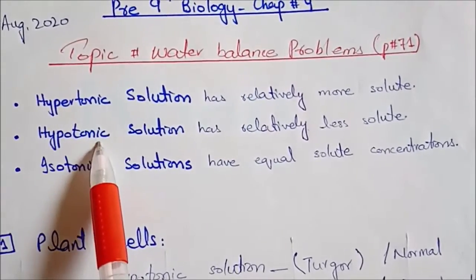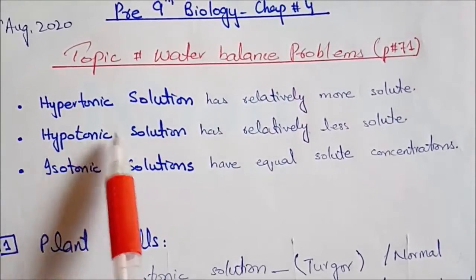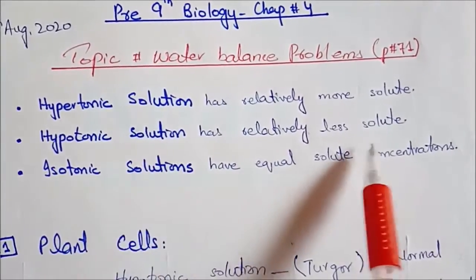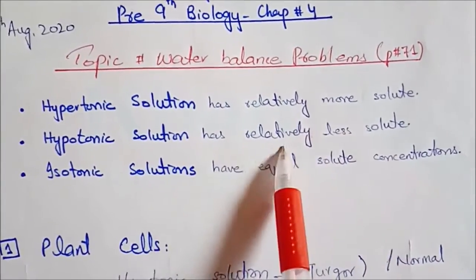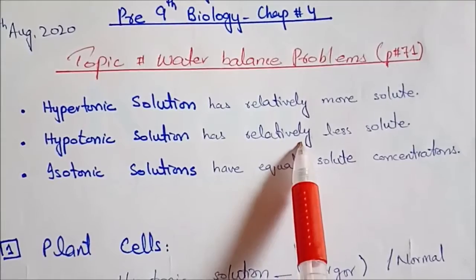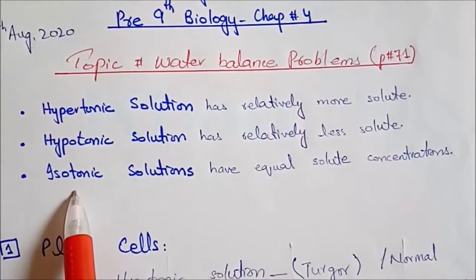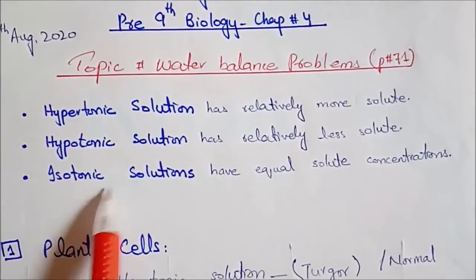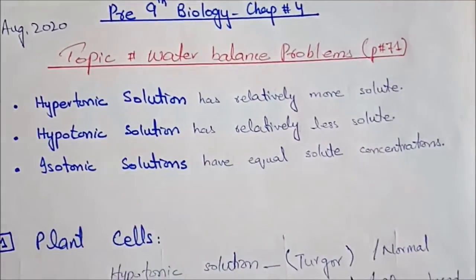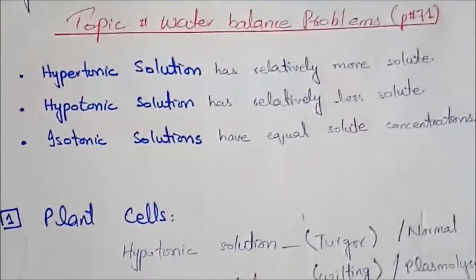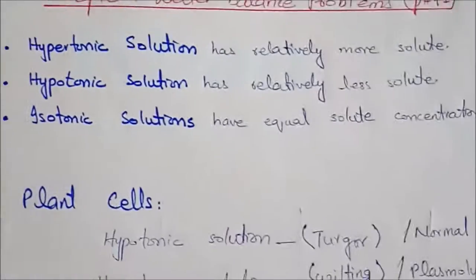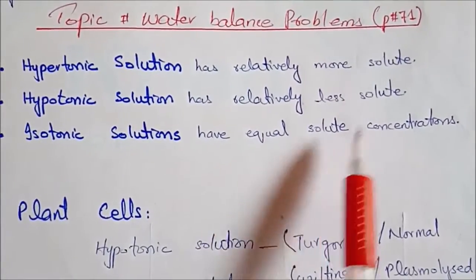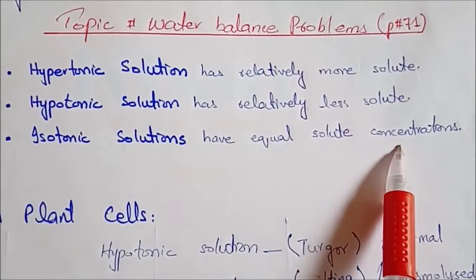Hypo means less/low. Hypotonic solution wo solution hai jisme solute ki amount nisbatan kam hoti hai. Iso means same — isotonic word hamesha do solutions ke liye use hoga. Do solutions aapas mein isotonic kab honge? Jab dono mein equal solute concentration maujud hogi.